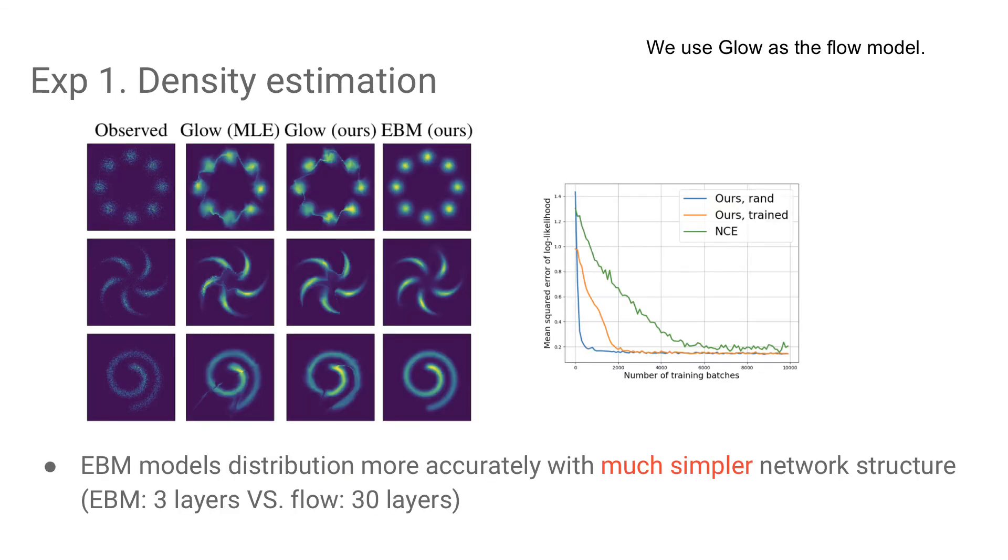In practice, we use GLOW as the flow model. The left plot shows the result on 2D density estimation. Notably, EBM can fit the distribution more accurately with much simpler network structure. The right plot shows the quantitative evaluation. FCE outperforms NCE and converges much faster.